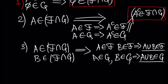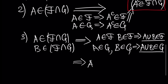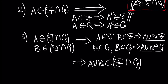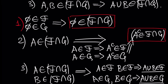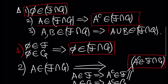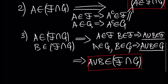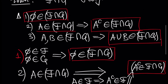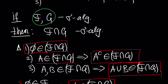So we have the union of A and B inside F, and the union of A and B inside G. It means that the union A ∪ B is inside the intersection of F and G. This finishes our proof. So once again: if F and G are sigma algebras, then the intersection of F and G is also a sigma algebra.